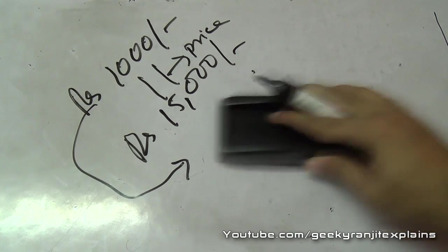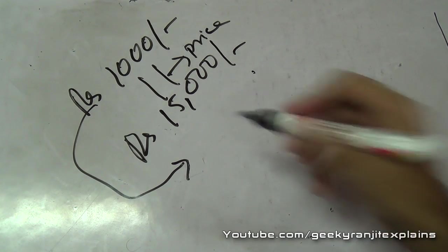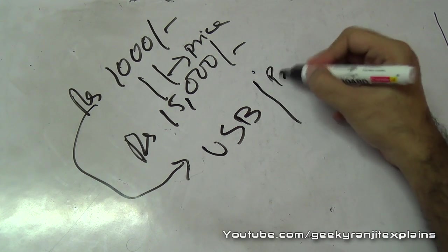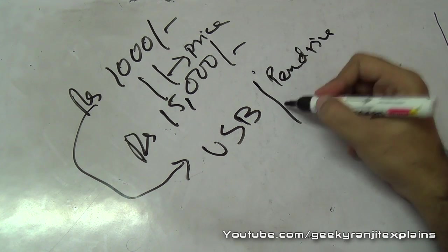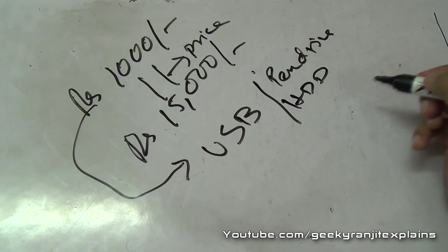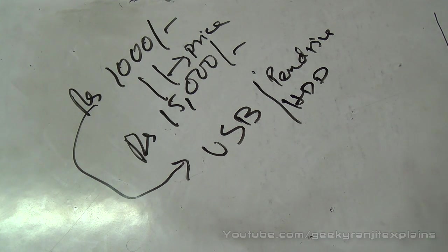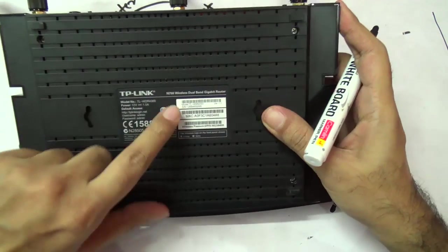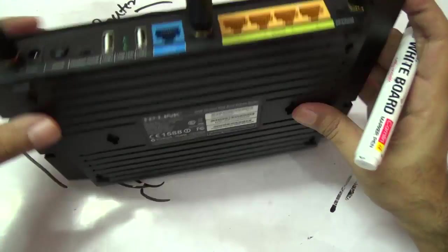Then some of the routers, for example advanced ones, they even have a USB port at the back which you can connect, for example, your pen drives or hard drives to create local storage on your network. Let me show you one of the routers now.